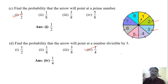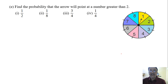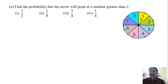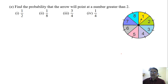Now we are moving towards the last question: find the probability that the arrow will point at a number greater than 2. So how many numbers are greater than 2? 6. So the probability is 6 by 8. So what is the correct option? 3 by 4.